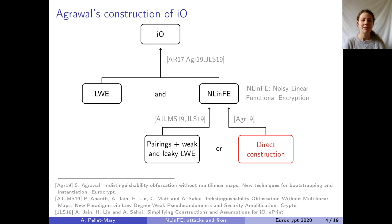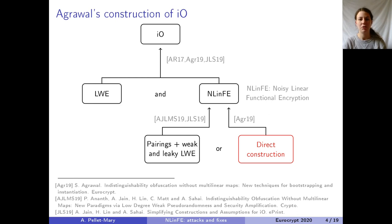Let me just mention that there has been a very long line of work on bootstrapping variants of FE to construct IO, and there has been recent very interesting work which can build IO from pairings and a weak and leaky variant of LWE. Now let's go back to our focus here, which is the direct construction of noisy linear FE from Shveta last year.